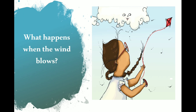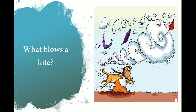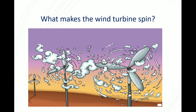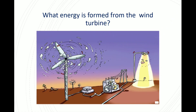Let's figure out the cause and effect in the story. What happens when the wind blows? Energy is formed when the wind blows. You are correct! What blows a kite? We need the wind to fly a kite. That's right! What makes the wind turbine spin? Due to the energy of the wind, the turbines spin. Fantastic! What energy is formed from the wind turbine? Electricity! Excellent!